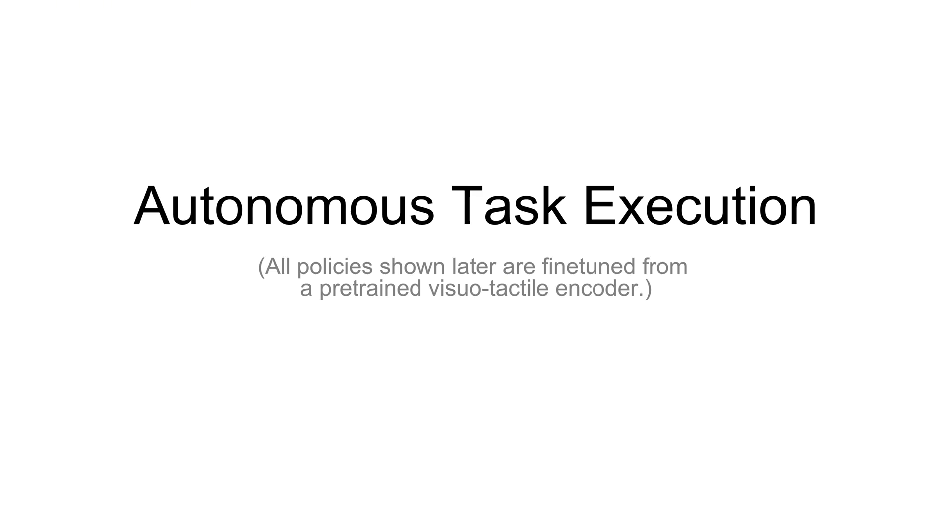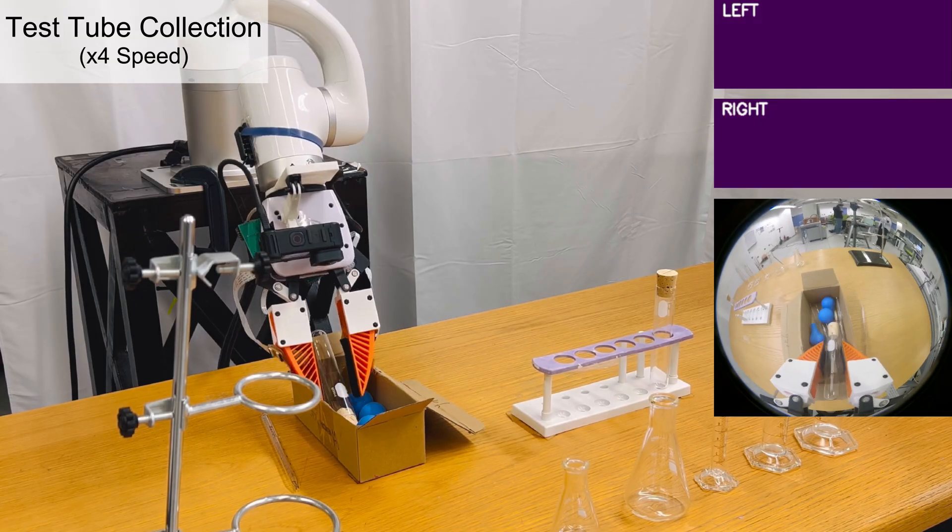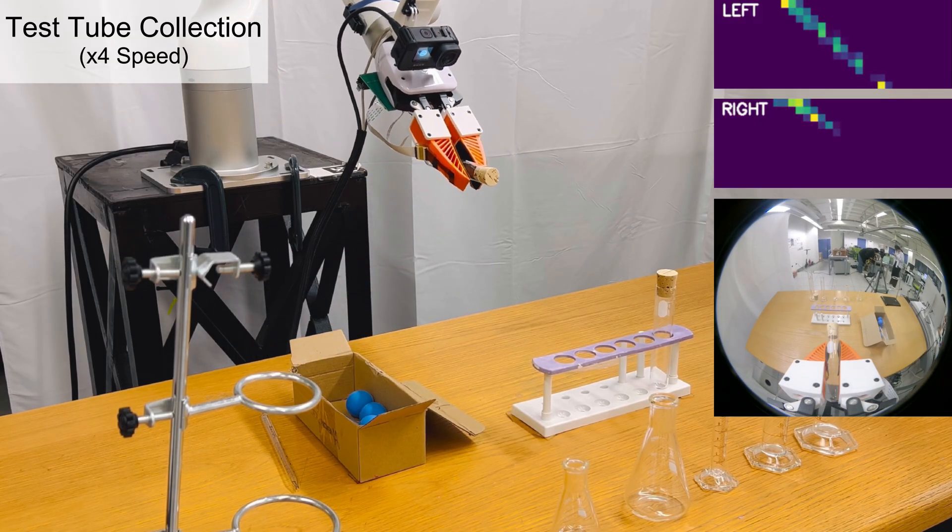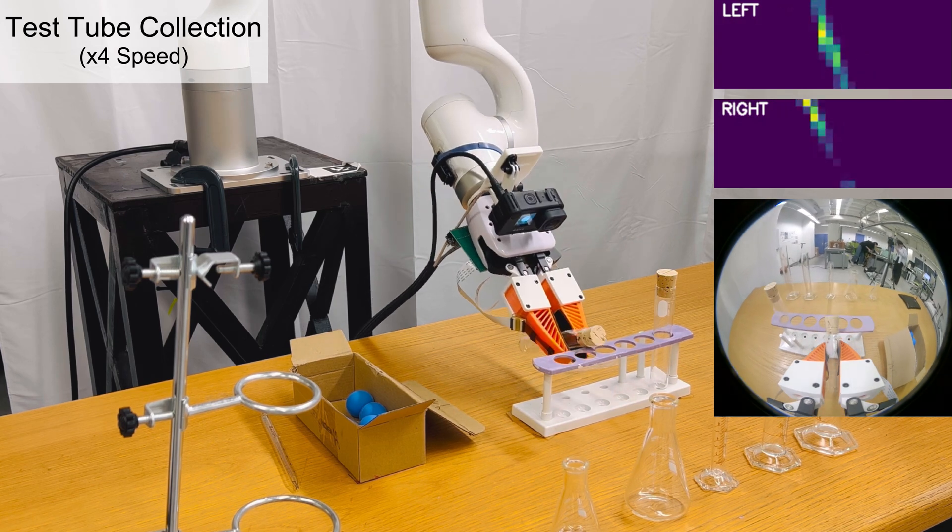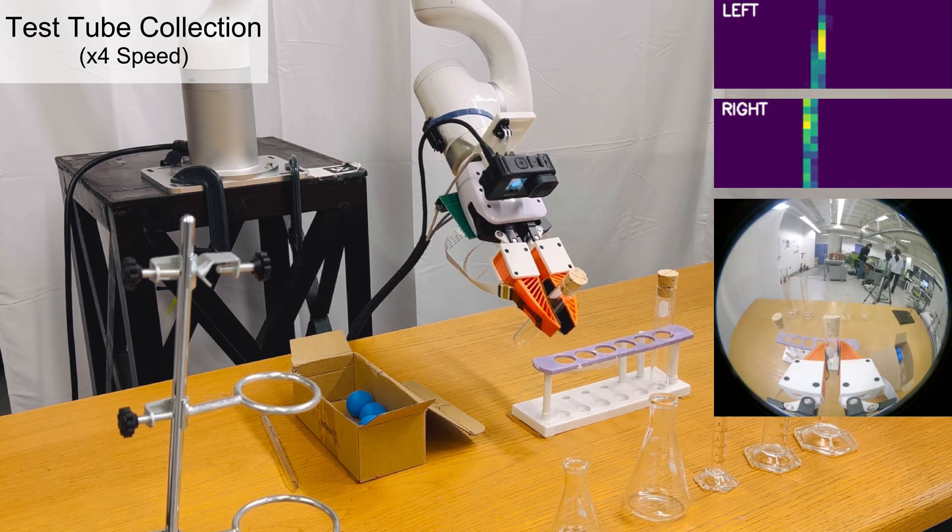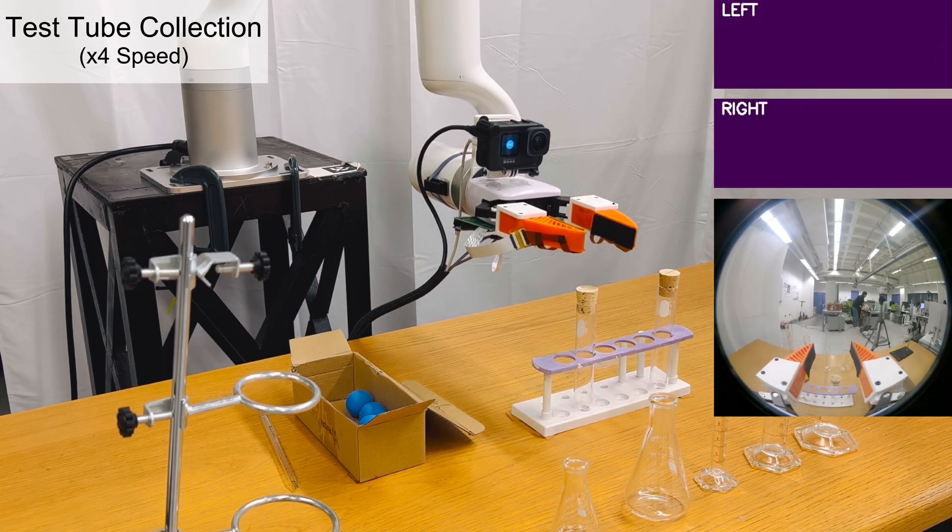Let's walk through a series of task demonstrations to see our approach in action. First, in the test tube collection task, our policy can handle a transparent test tube, performing precise intent reorientation, and then inserting it even when the visual view is occluded.